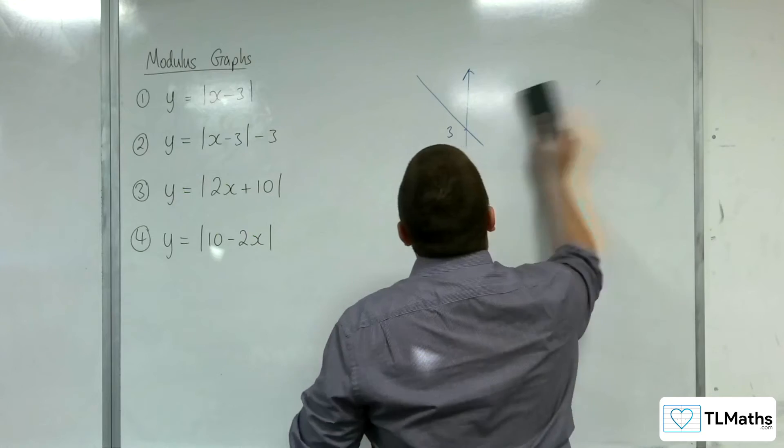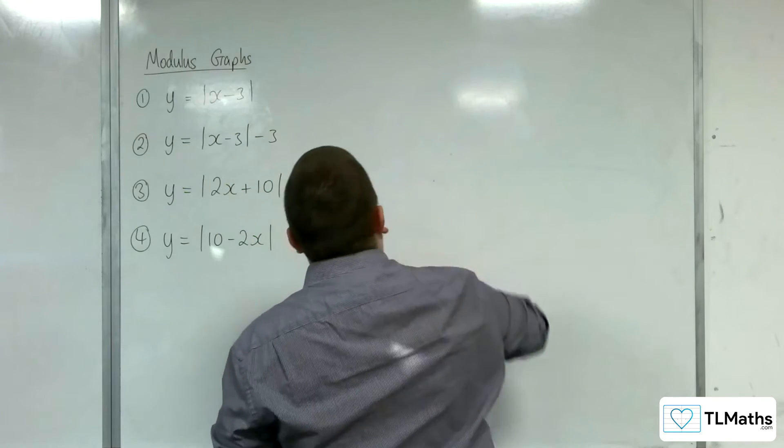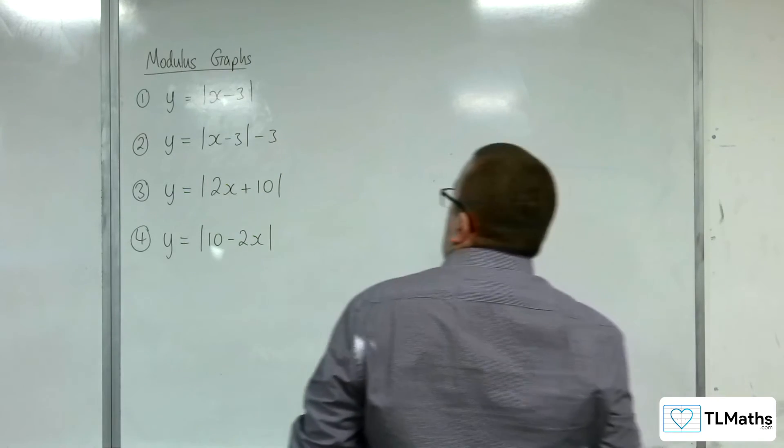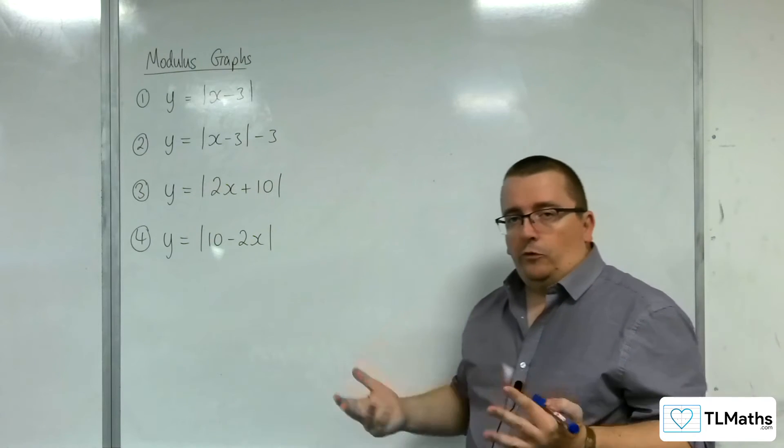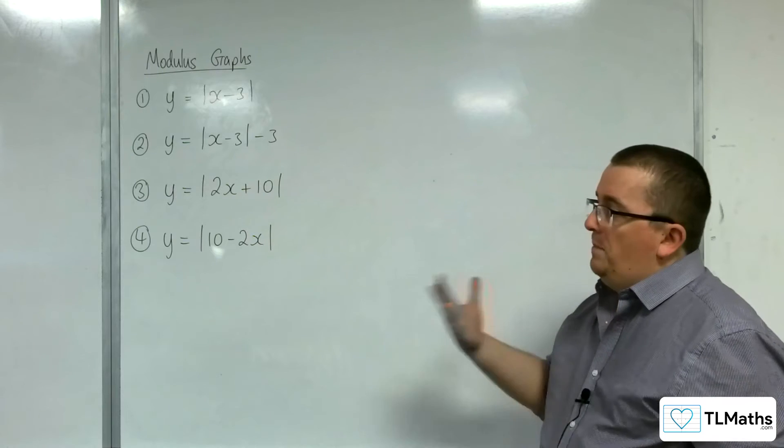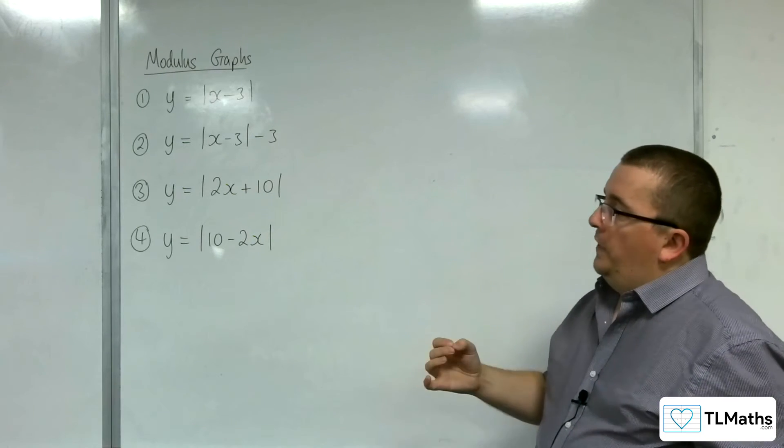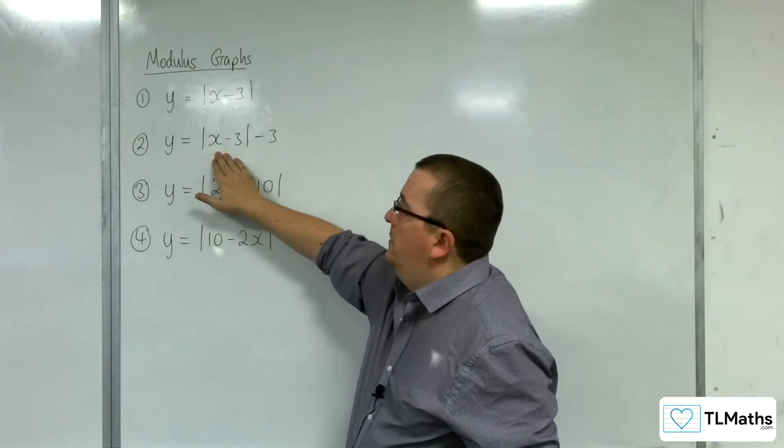So, let's see what happens when we look at example number 2. So y is equal to the modulus of x take away 3, take away 3. Now, if this was completed square form, we'd be thinking, well, the vertex will be at (3, -3).